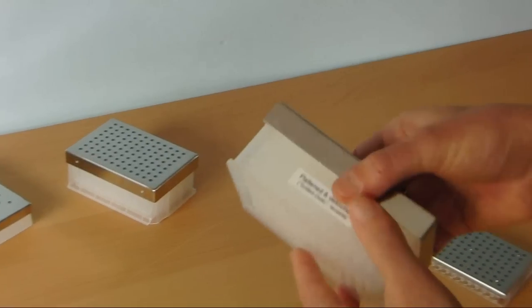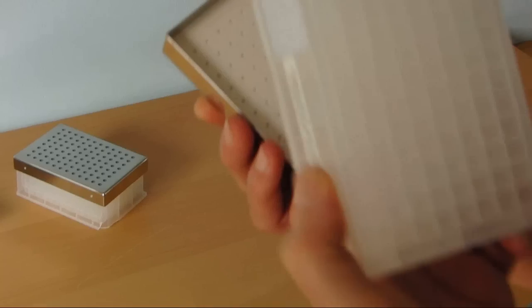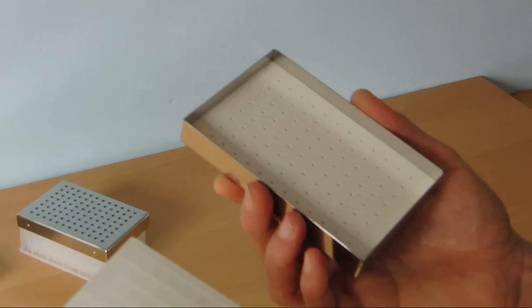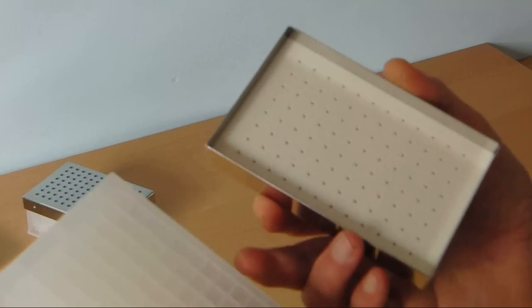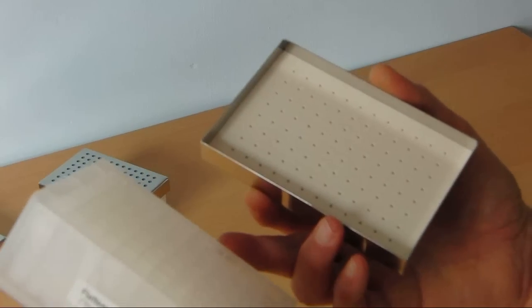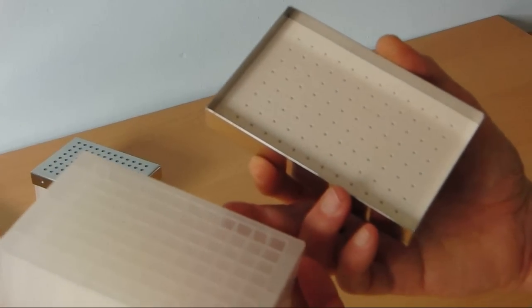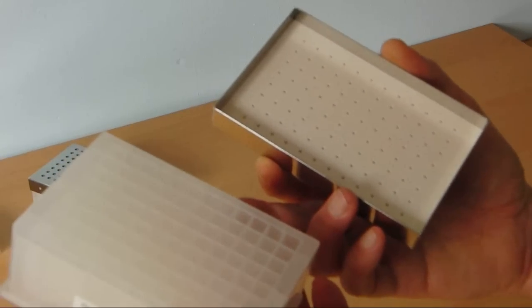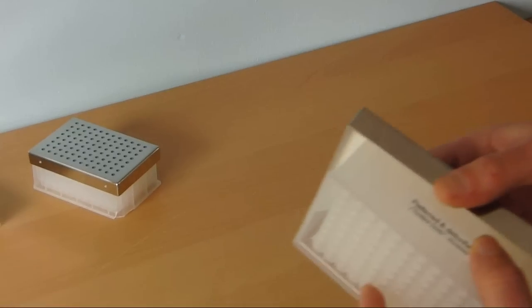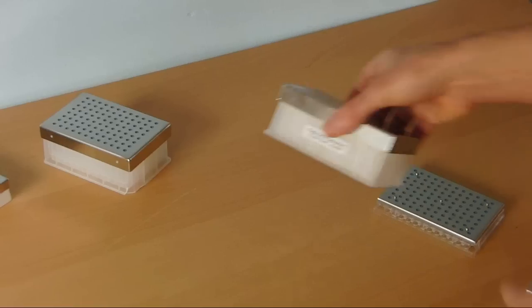We also have sandwich covers for 96 well microtiter plates. They are meant for reusable polypropylene deep well plates, which we supply as well, flattened and detoxified. These sandwich covers are compatible with all types of 96 deep well microtiter plates commercially available.